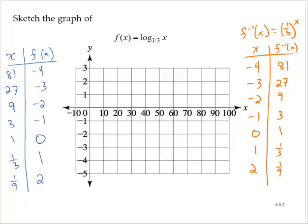And I'm going to plot the points, in a sense, from bottom to top in terms of this table of values. So I have one-ninth, 2. One-third, 1. 1, 0. 3, negative 1. 9, negative 2. 27, negative 3. 81, negative 4.